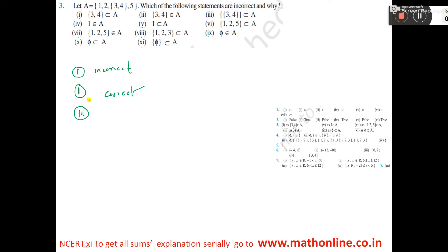Now, number 3: this is an element and forms a set. So, this is a set, subset of A. This is also correct because this is one element, and this element forms a set because the second bracket is given outside.